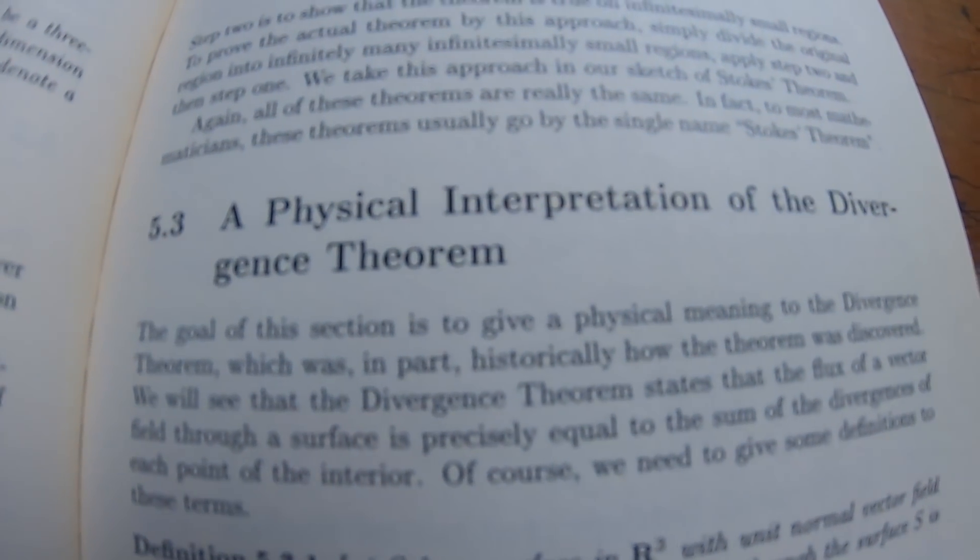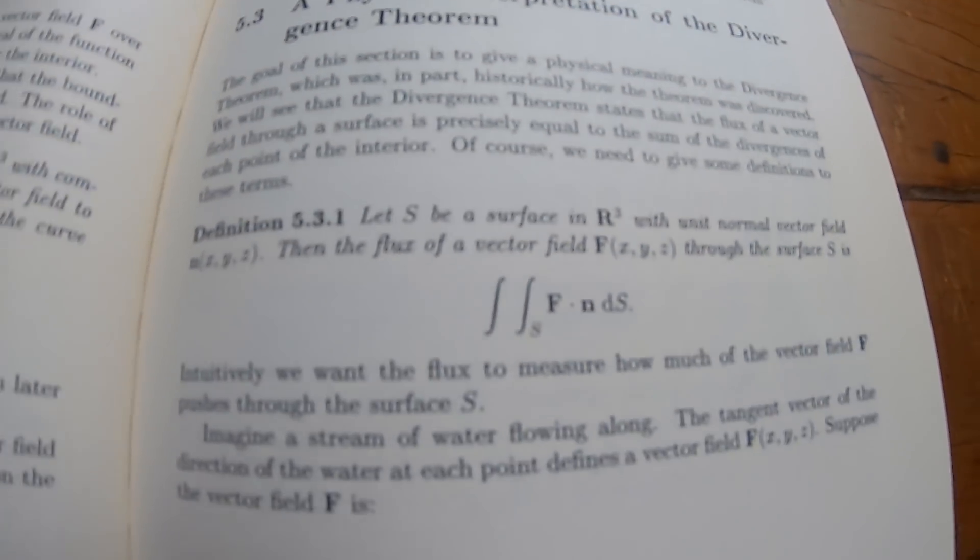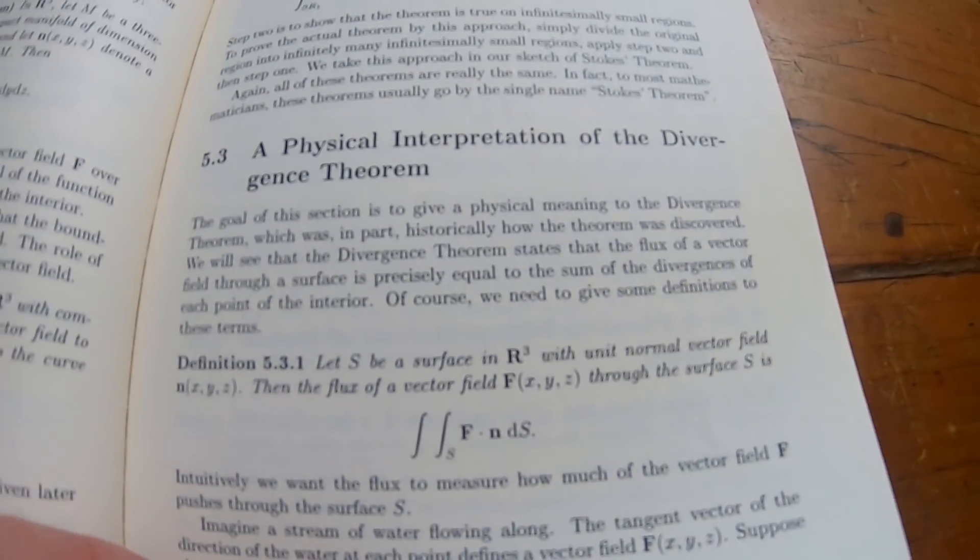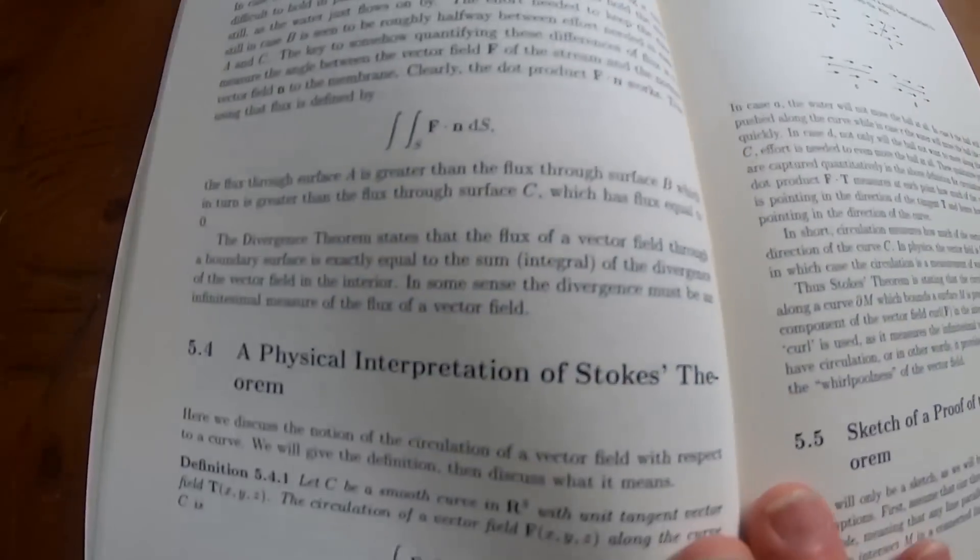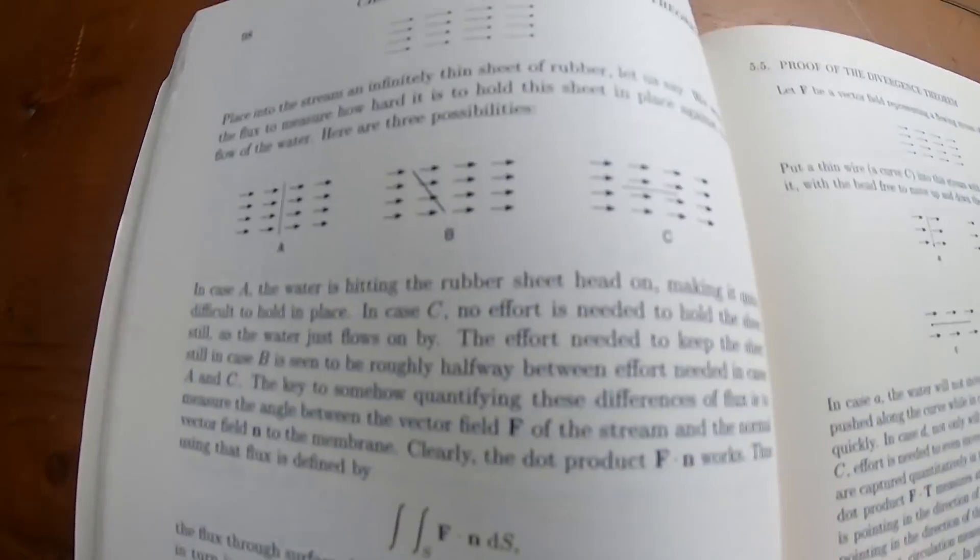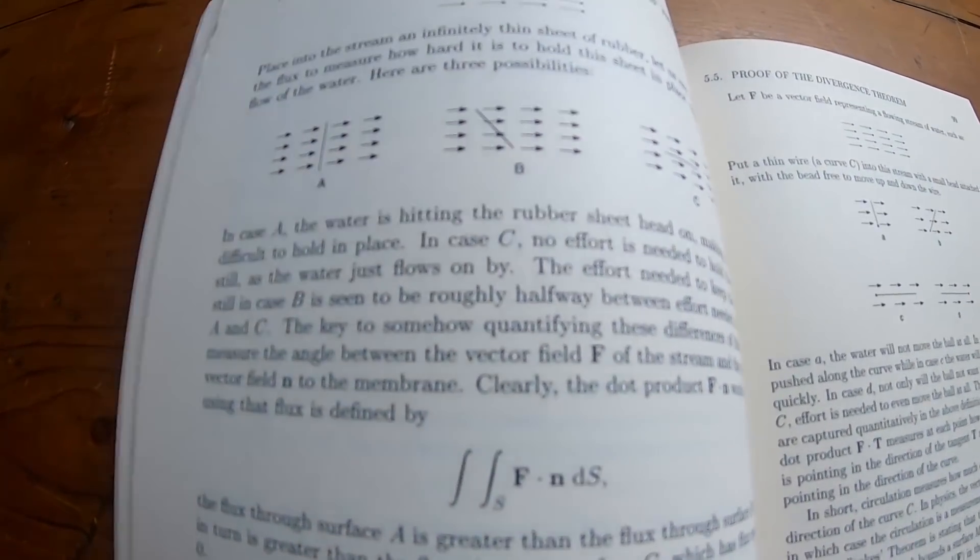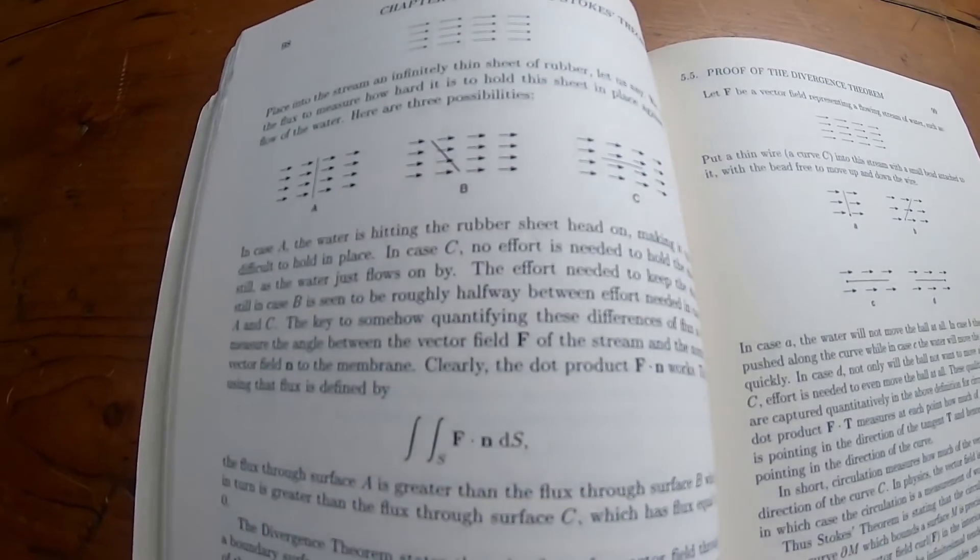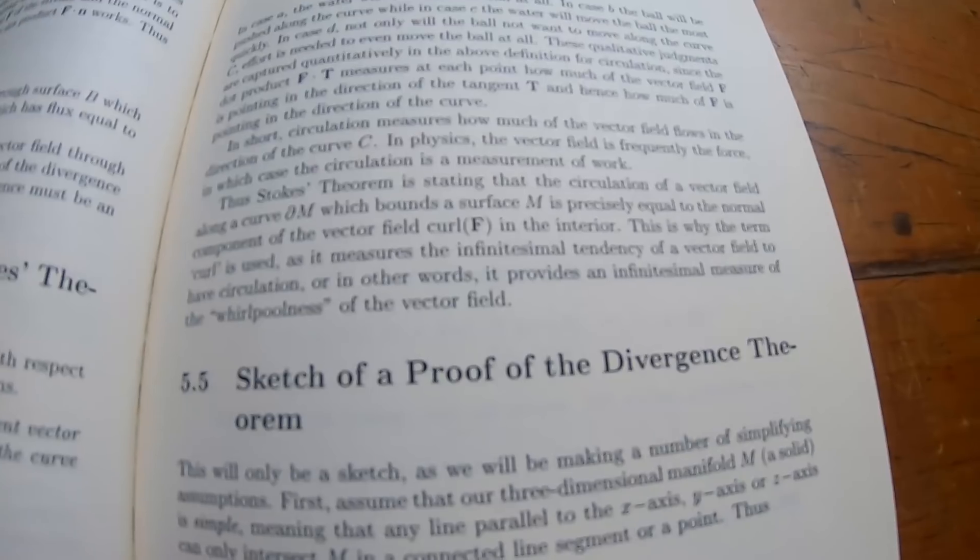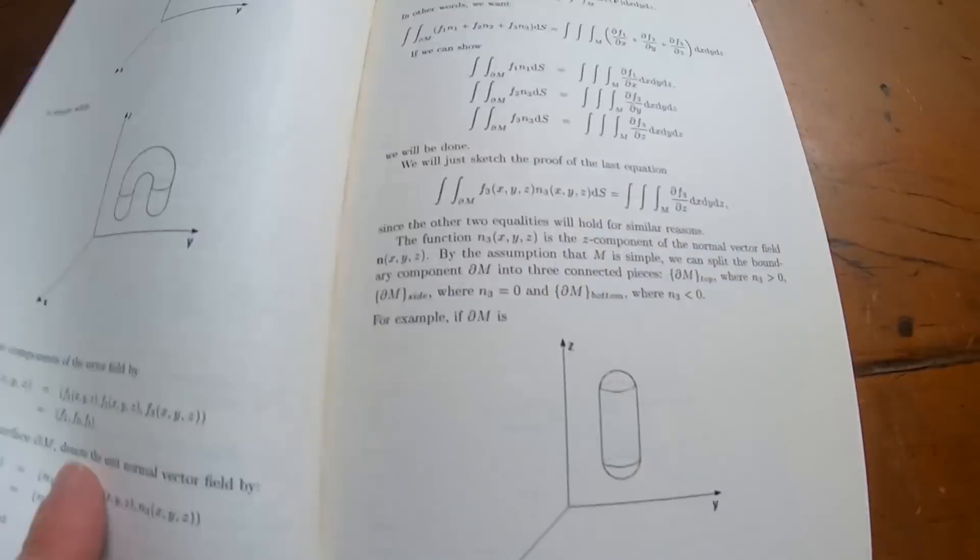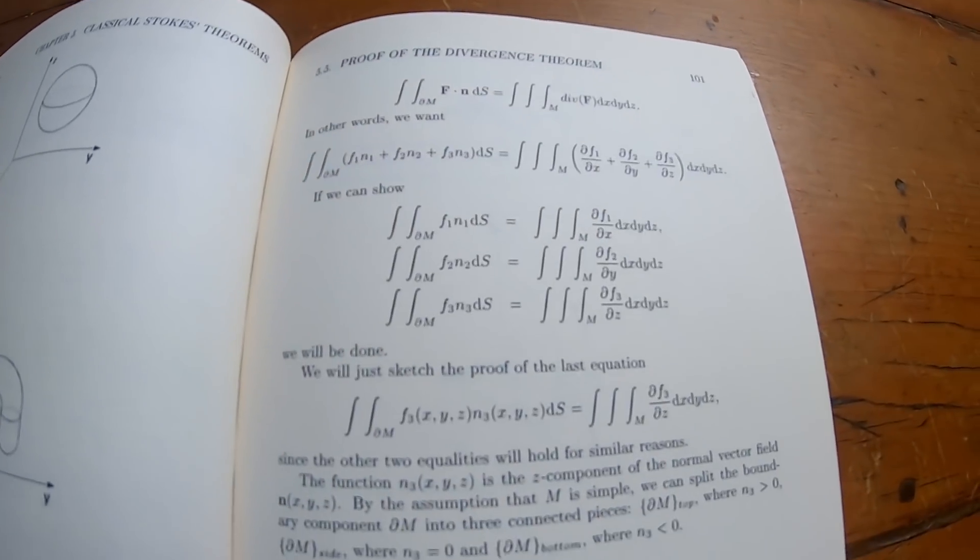He does a really good job in this section. Here, Garrity tries to give a physical interpretation of the divergence theorem. He does a pretty good job. It's a tough one, but he explains it well. If you take the time to read it, you should be able to understand it. And then he does it here as well with Stokes theorem. So he does a good job on explaining all of this. It takes a little bit of work to get here. And I skipped several pages. There's a lot of background here. So it's really about just getting through it. And then here he gives a sketch of the proof of the divergence theorem. Let me just turn the page so you see it. So he goes through all of that.